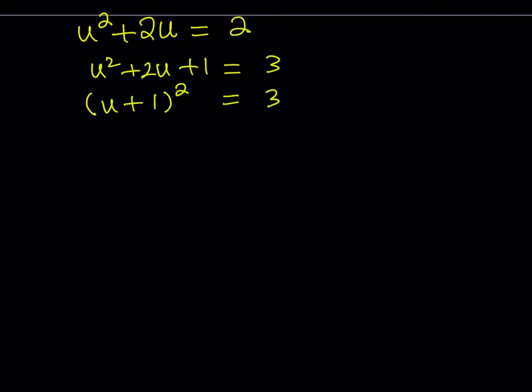We can take the square root and we get two solutions from here. u plus 1 equals root 3 or u plus 1 equals negative root 3. From here, we can isolate u. u becomes root 3 minus 1 or u becomes negative root 3 minus 1.